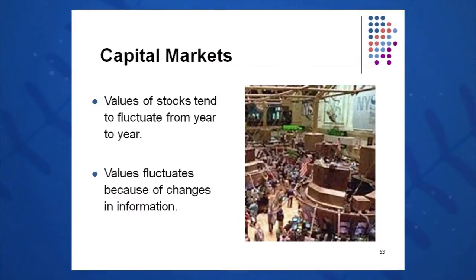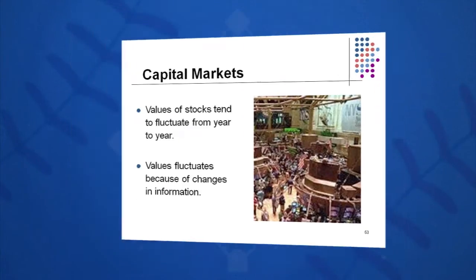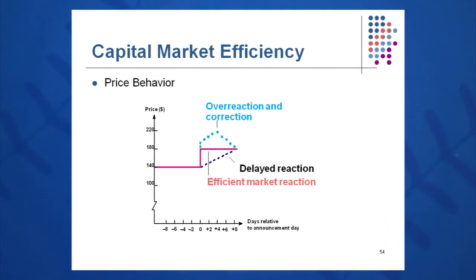We know that the values of stocks fluctuate by the second and also from year to year. These values fluctuate because of changes in information. Essentially, an efficient capital market is one where prices change rapidly and adjust rapidly to changes in information.